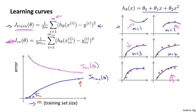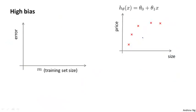Now let's look at what the learning curves may look like if we have either high bias or high variance problems. Suppose your hypothesis has high bias. To explain this, I'm going to use a standard example of fitting a straight line to data that can't really be fit well by a straight line, so we end up with a hypothesis that maybe looks like that.